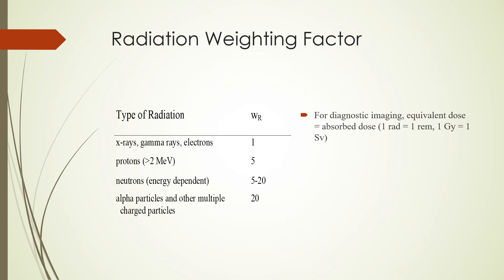On this slide we see different radiation weighting factors. For x-rays, gamma rays, and electrons, the radiation weighting factor is 1. For protons greater than 2 MeV, the radiation weighting factor is 5. For neutrons, the radiation weighting factor ranges between 5 and 20 depending upon the energy. For alpha particles and other multiply charged particles, the radiation weighting factor is 20. So in our diagnostic energy range, because we have for x-rays and gamma rays a radiation weighting factor of 1, we can say that the absorbed dose is equal to the equivalent dose.